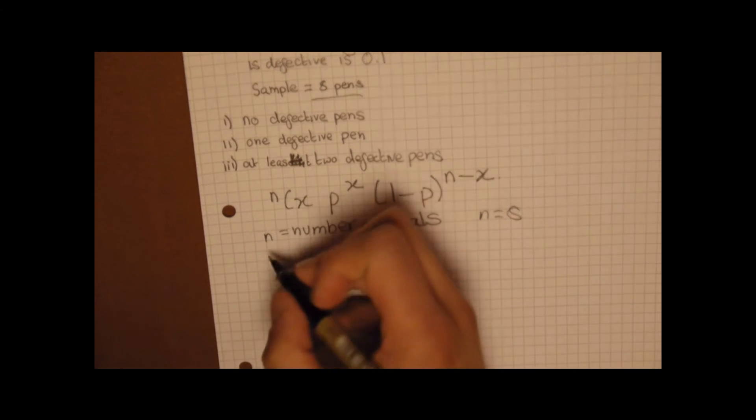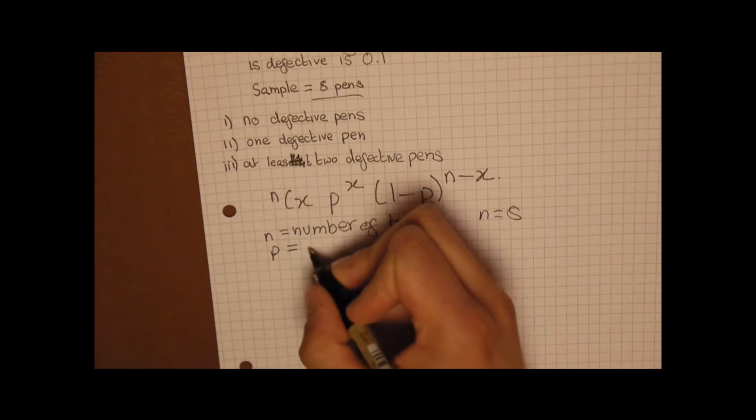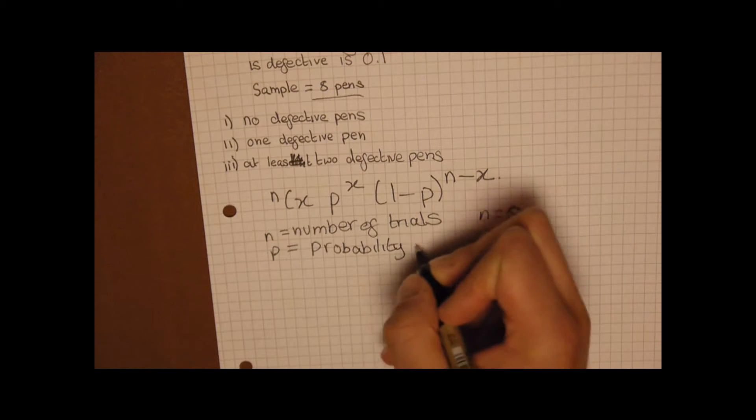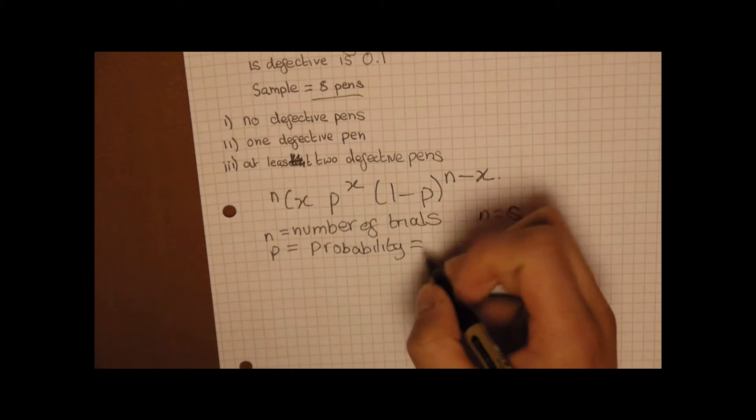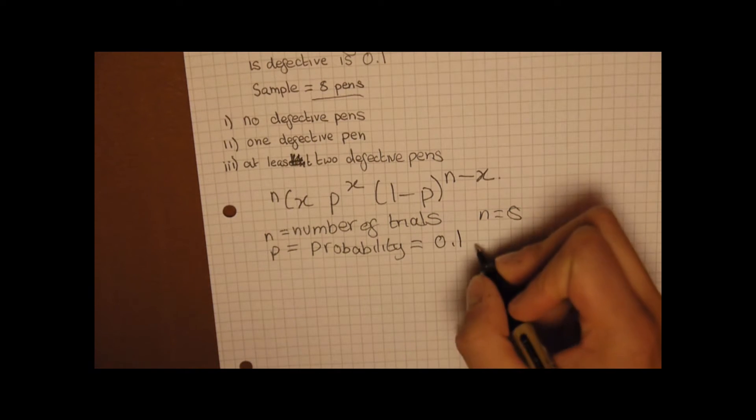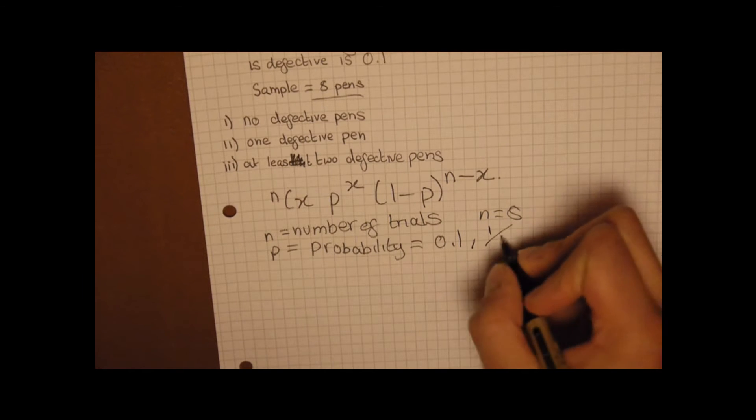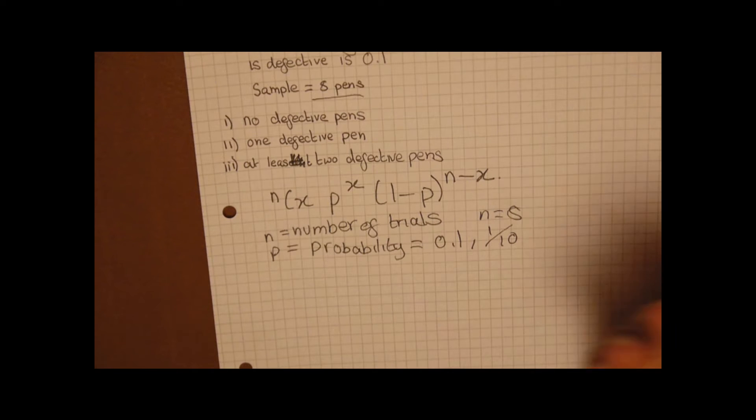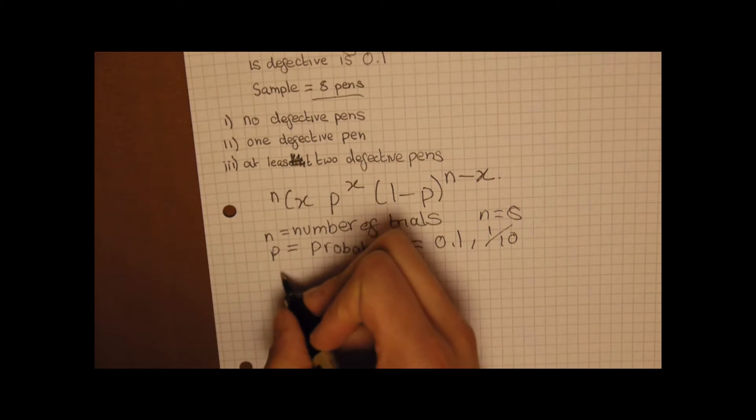p is your probability, which is 0.1 or 1 over 10 effectively. I'll probably just use 0.1 as it's written and it'll probably be a bit simpler.